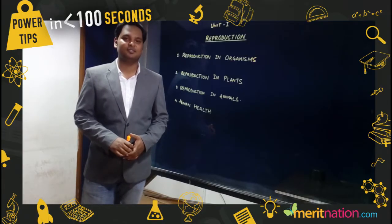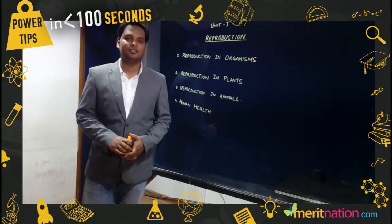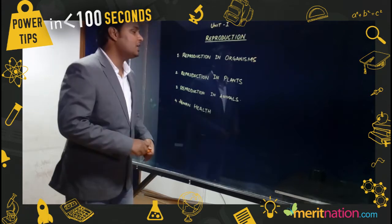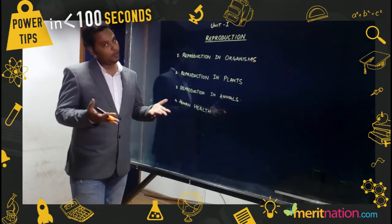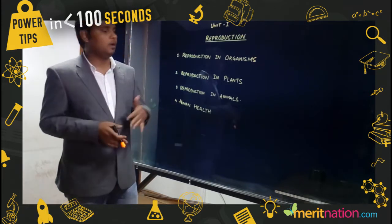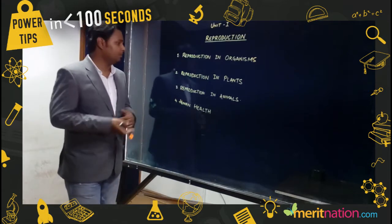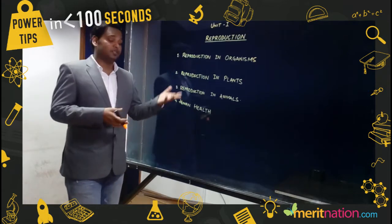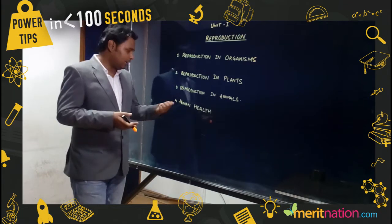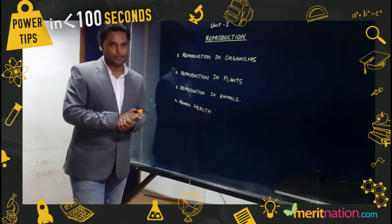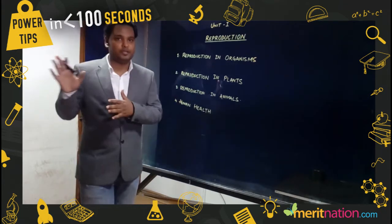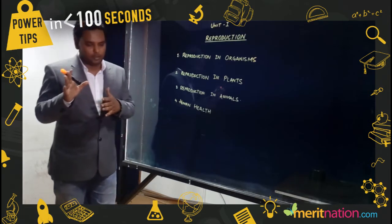What are the important topics in Unit 1? Unit 1 is Reproduction, and it contains four chapters: Reproduction in Organisms, Sexual Reproduction in Plants, Reproduction in Animals, and the last one is Human Health.